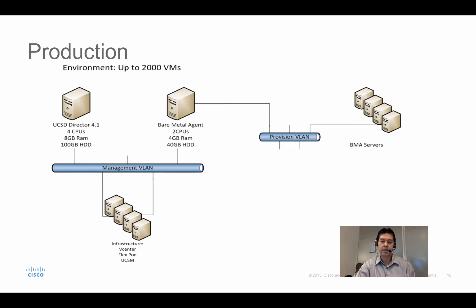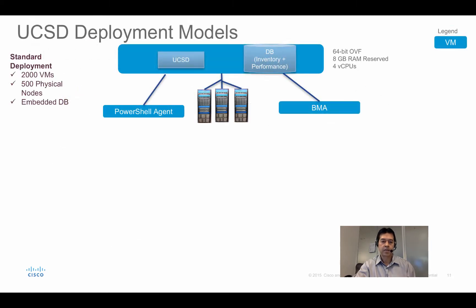This is an important point — UCSD makes it very simple. Once you add the bare metal agent on the portal, it gives you the option for two interfaces or one interface, and then you just enter the information and it does everything for you.